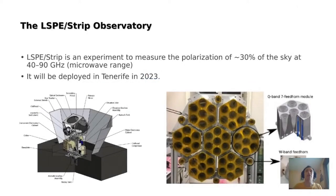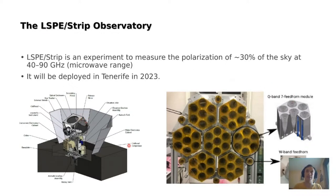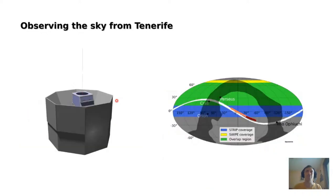LSP Strip will measure the polarization of one-third of the sky in the range between 40 and 90 GHz. The instrument is an array of 55 receivers — 49 at 40 GHz, the larger antennas, and 6 at 90 GHz. They are coupled with a telescope, and next year both the instrument and the telescope will be deployed to Tenerife in the Canary Islands.